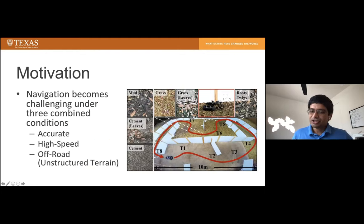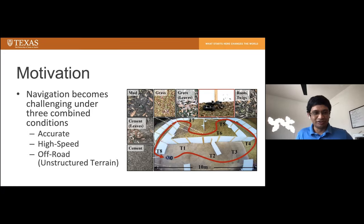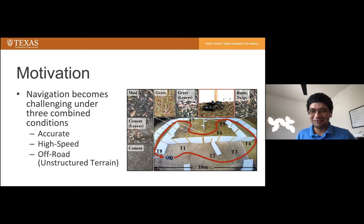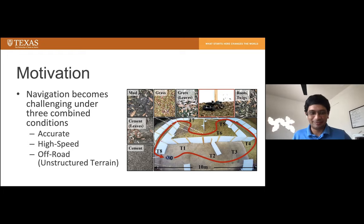The motivation of this work is the realization that high-speed navigation becomes challenging under three combined conditions: if you want high accuracy — that is, if you have a specific trajectory you want to follow — and I completely agree that if you want to specify a trajectory, you might not get the fastest behavior, and that's where the challenge is. The second condition is doing it at the highest possible speed, and the third is doing it off-road on unstructured terrain.